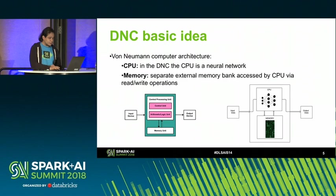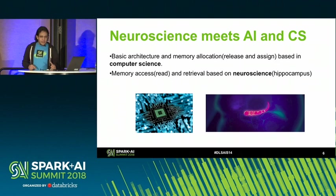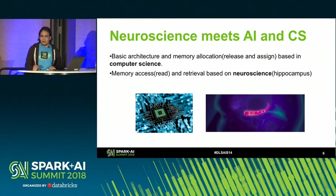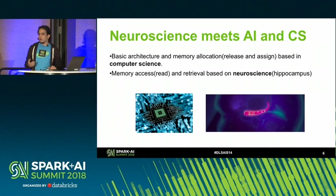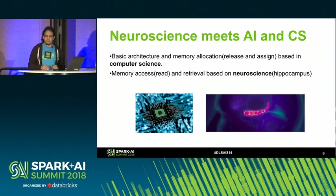So where did this model come from? It came from neuroscientists and computer scientists working together in the DeepMind team. This was proposed by Demis Hassabis and Alex Graves at DeepMind. The basic architecture of the memory system — memory allocation — is based on computer science, like how our operating systems work. But the reading of the memory is based on neuroscience: the way our brain works when we retrieve memories of our past. So basically, this is a neuroscience-meets-AI model.